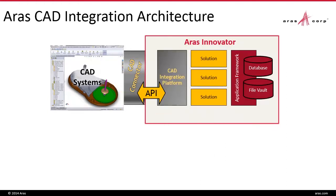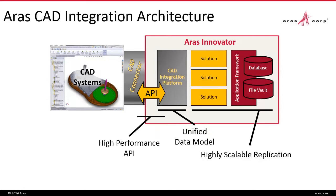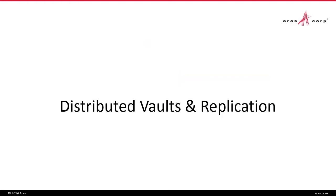Let's look at the underlying architecture which makes ARIS CAD integration possible. Starting from the right, we have highly scalable replication for file management, a unified data model, high-performance APIs, and optimized connectors across mechanical, electronic, and electrical domains. Let's look at each of these areas in detail, starting with distributed vaults and replication.